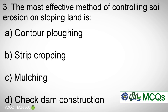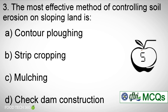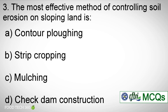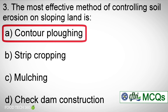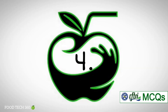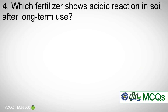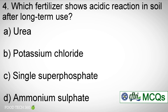Question number three: The most effective method of controlling soil erosion on sloping land is — options: a) Contour plowing. b) Strip cropping. c) Mulching. d) Check dam construction. Correct answer: a) Contour plowing.